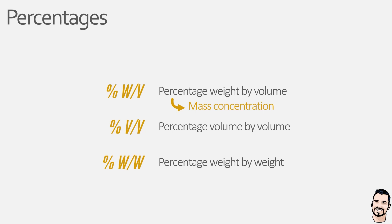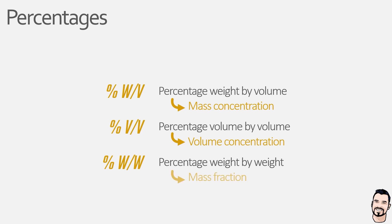Our percentage volume by volume measure is for volume concentration — the ratio of solute volume to solution volume — and is commonly used when the solute is a liquid added to a liquid solvent. And finally we have percentage weight by weight, which is much less common and we won't look at this in any detail here; however, this is for mass fractions, so the ratio of solute weight to the weight of the solution.